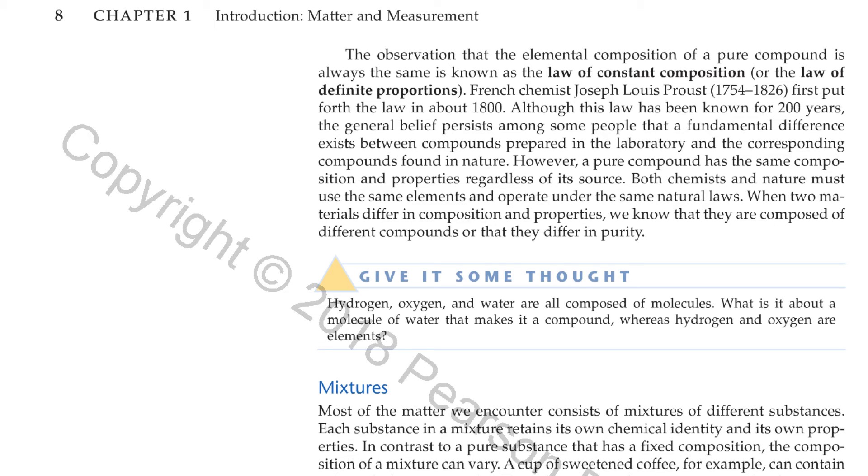French chemist Joseph-Louis Proust first put forth the law in 1800. Although this law has been known for 200 years, the general belief persists among some people that a fundamental difference exists between compounds prepared in the laboratory and the corresponding compounds found in nature.